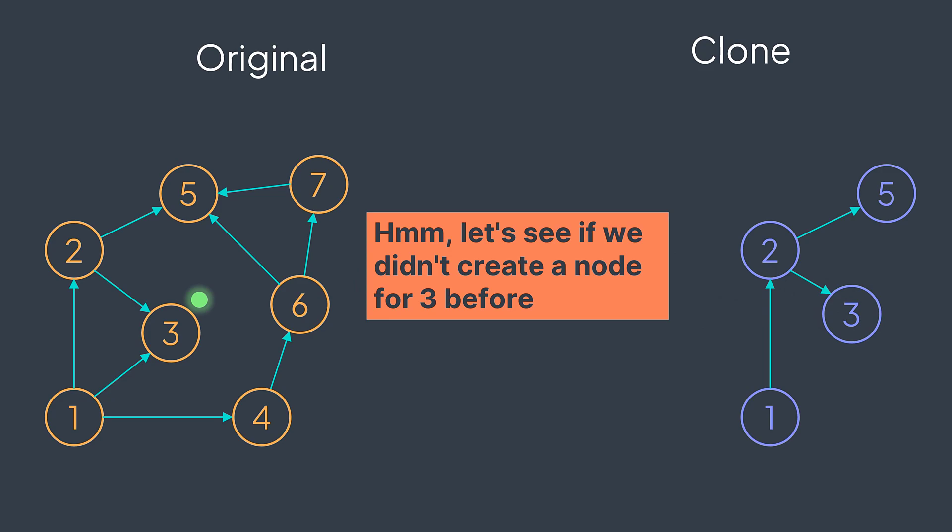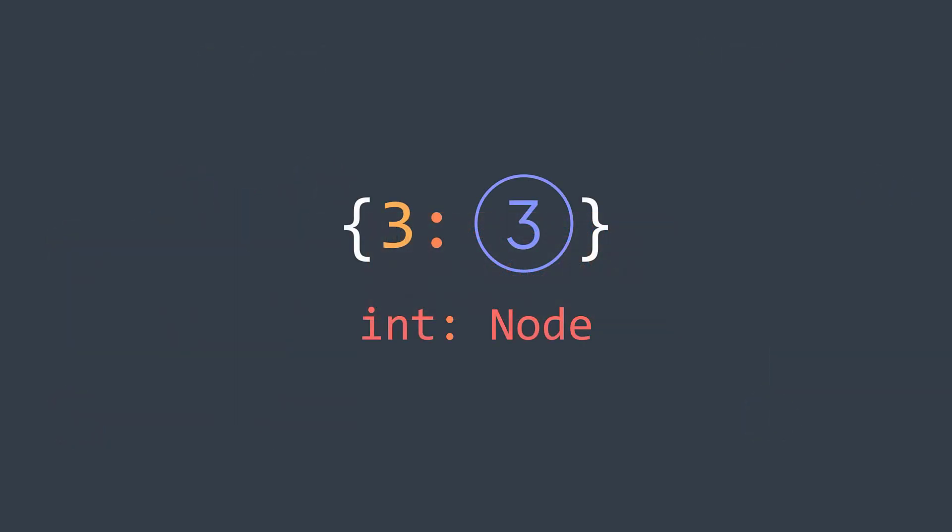And by doing so, all those going to the value three will have the same node in their neighbors. And our hash table will be of type int to node. Our key will be an integer, for example three, and the value will be the node we created when cloning the value three.